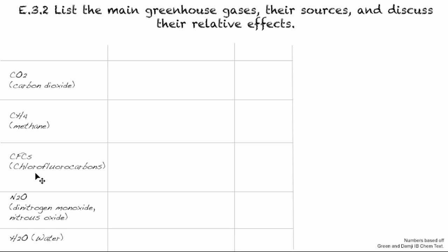The main greenhouse gases are: CO2, methane, chlorofluorocarbons (CFCs), N2O — dinitrogen monoxide, also known as nitrous oxide or laughing gas — and water. Let's take a look at their sources.